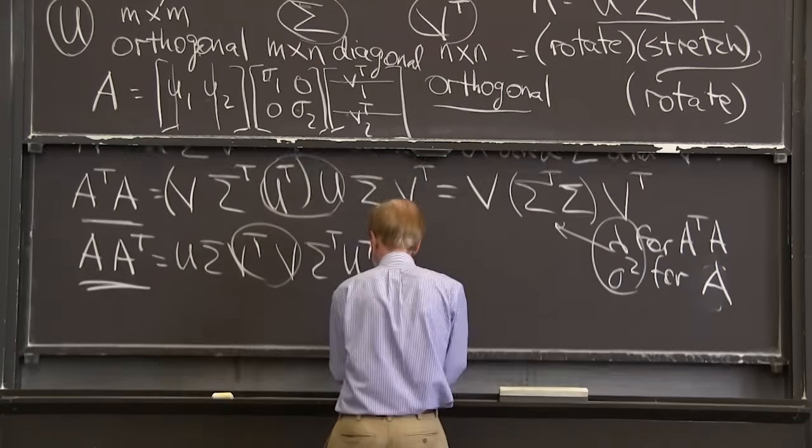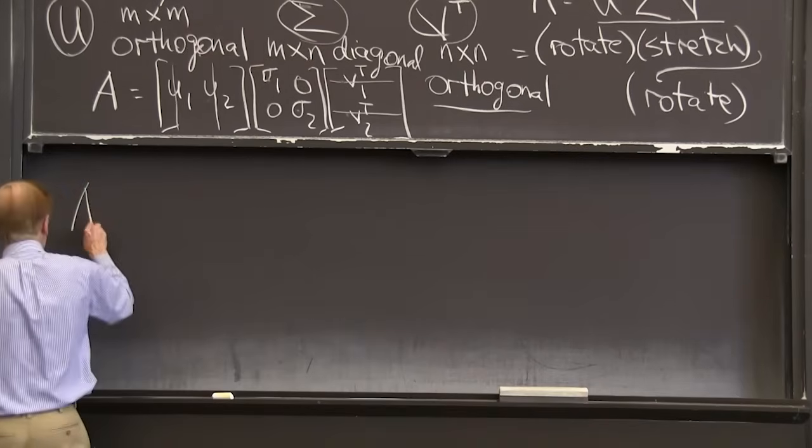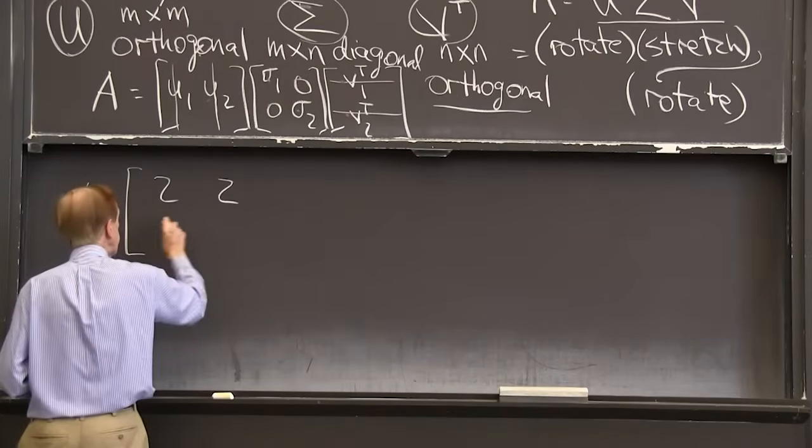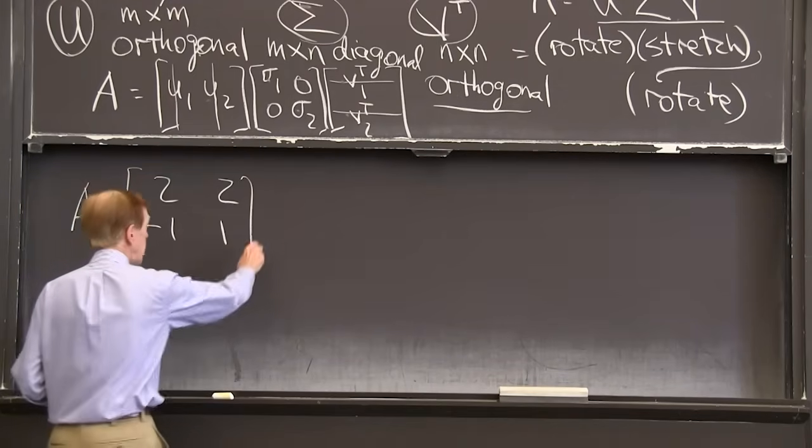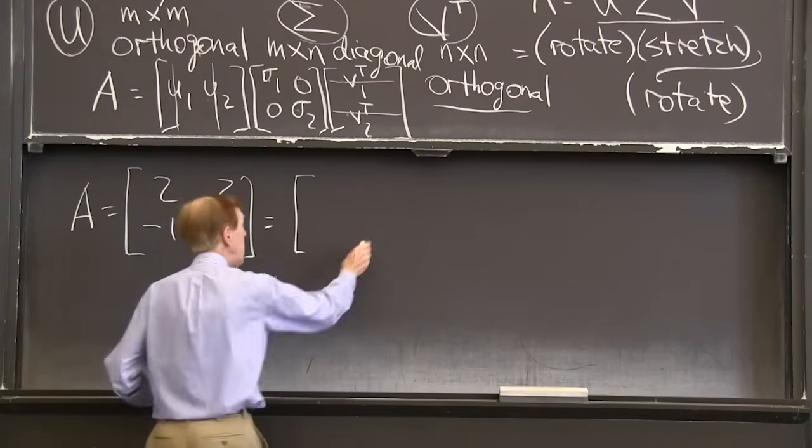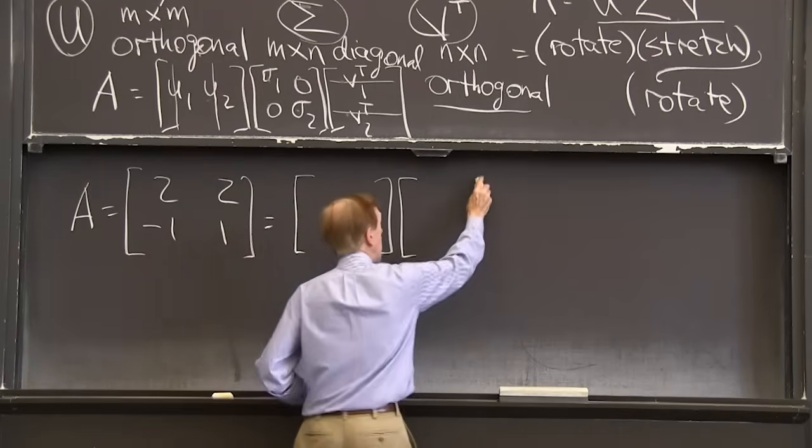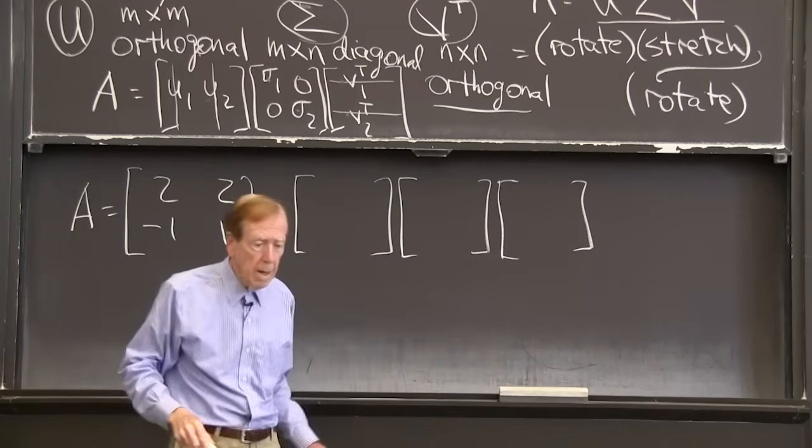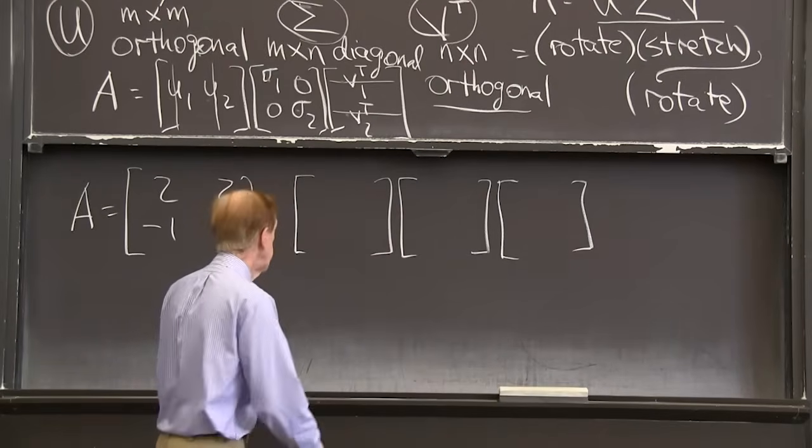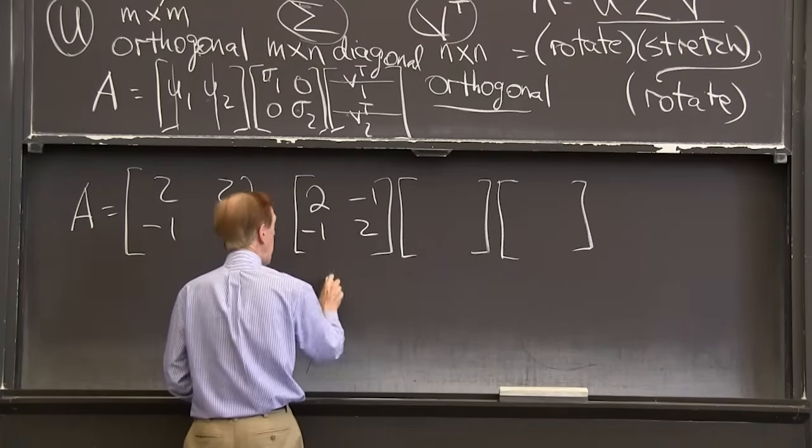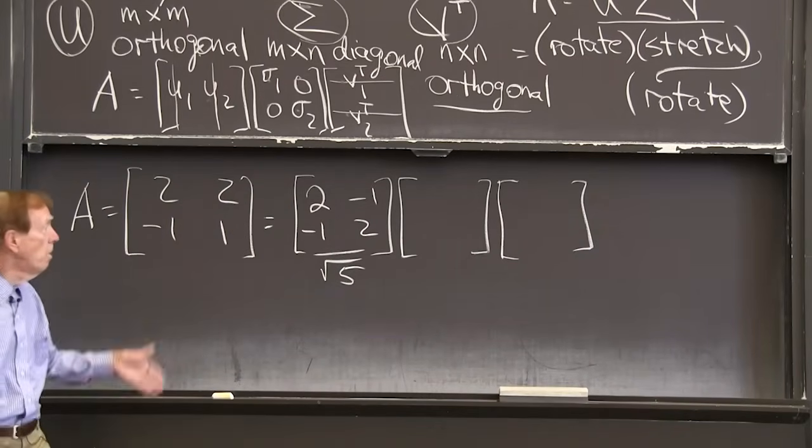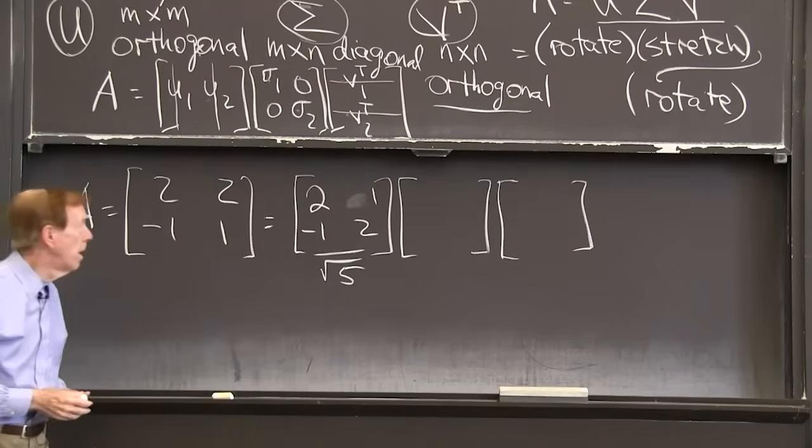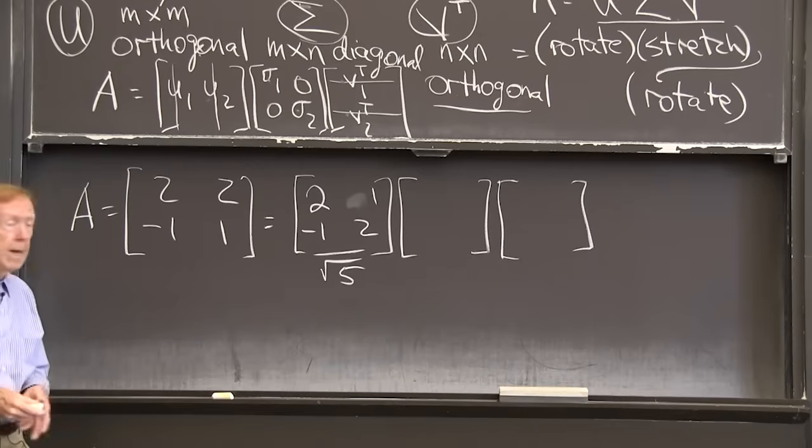Here's an example. Suppose A, I'll make it a square matrix. It's 2, 2, minus 1, 1. Not symmetric, certainly not positive definite. I wouldn't use the word because that matrix is not symmetric. But it's got an SVD, three factors. And I work them out. This is the orthogonal matrix. I have to divide by square root of 5 to make it unit vectors. That's not going to work. How about that? The two columns are orthogonal and that's a perfectly good U.